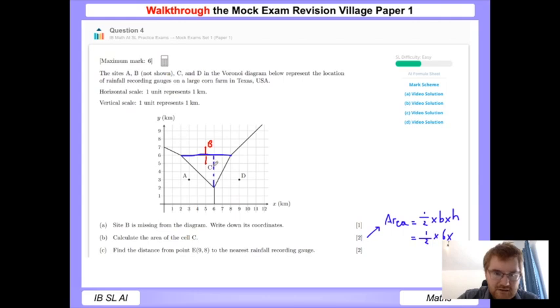We're going to do a half times the base here, going from two to eight, which is six, and then the height going from six to two is four. So we need to work out half times 24.